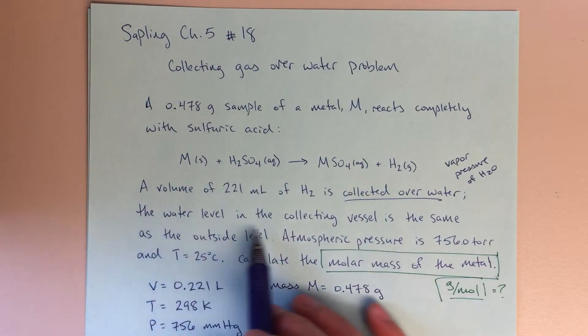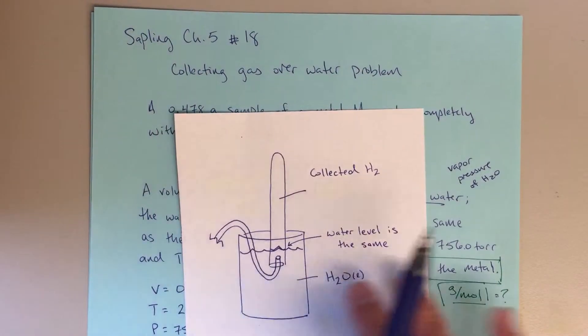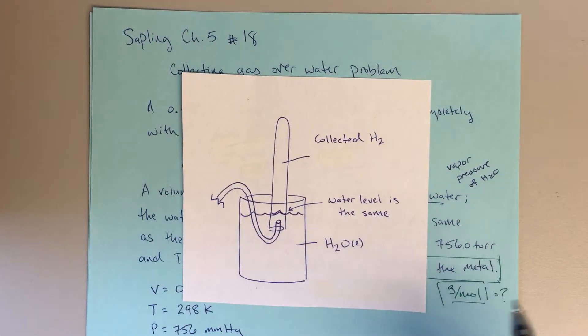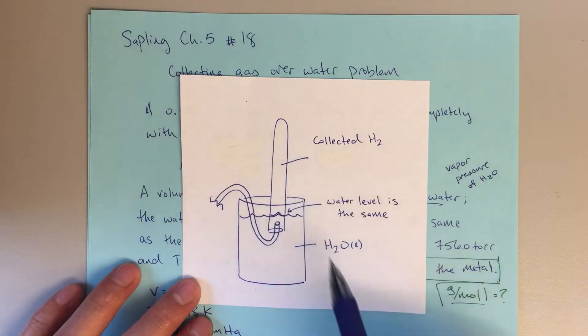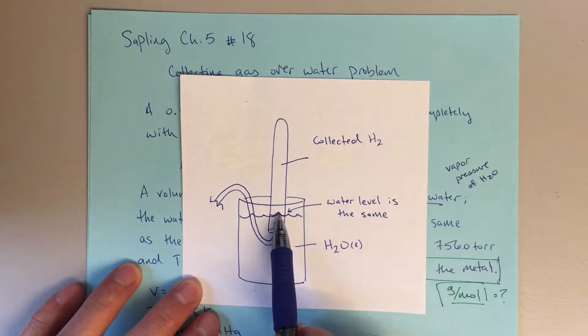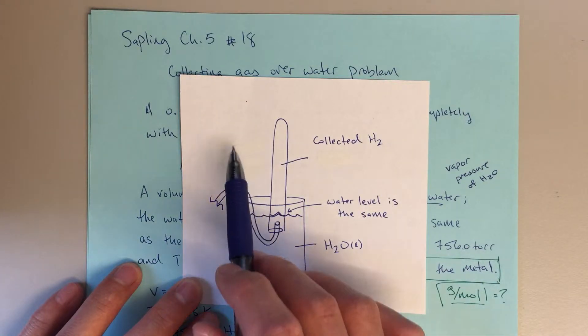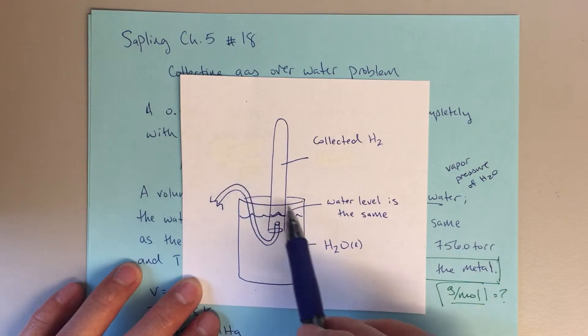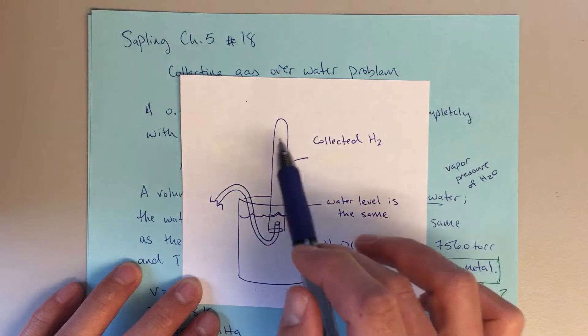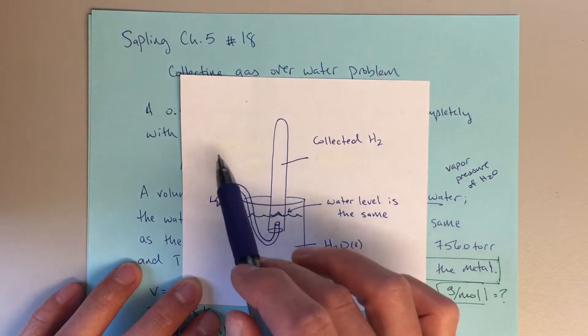It says then the water level in the collecting vessel is the same as the outside level. So I drew a little picture to help us figure out what that means and here we've got collected H2 and it says here the water level is the same. So basically what that's telling us is that the pressure on the outside is going to be equal to the pressure on the inside.